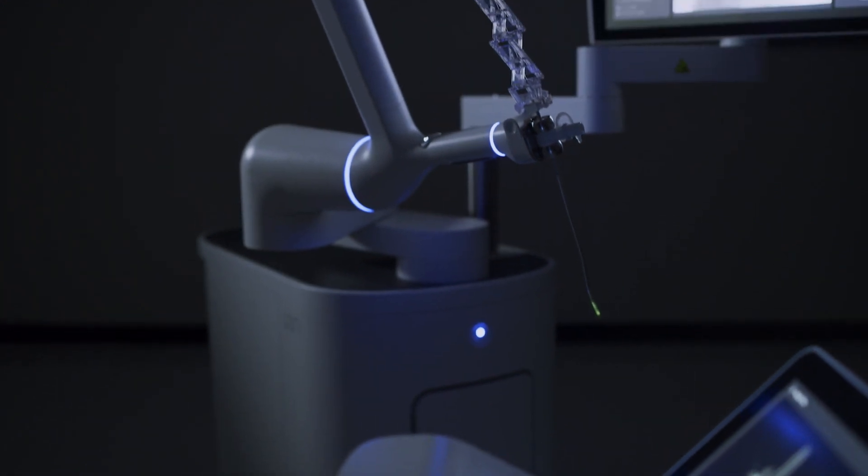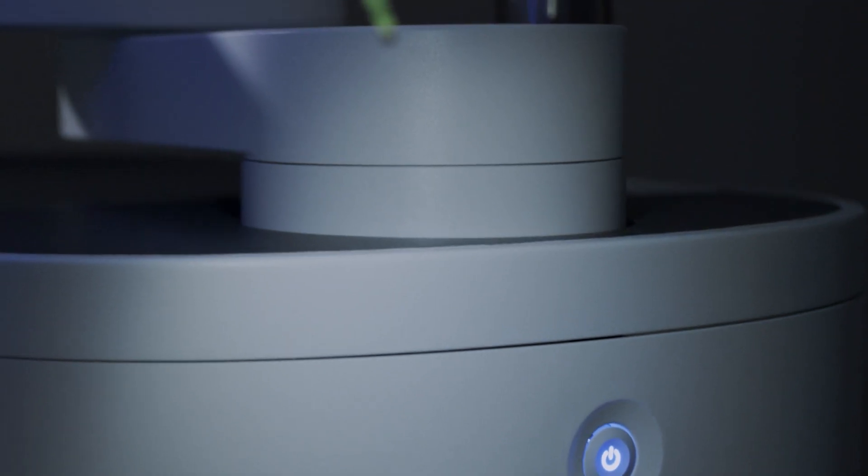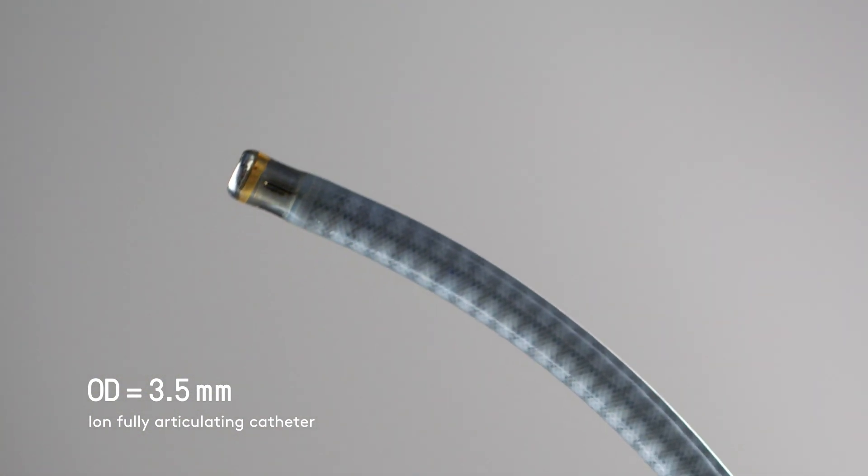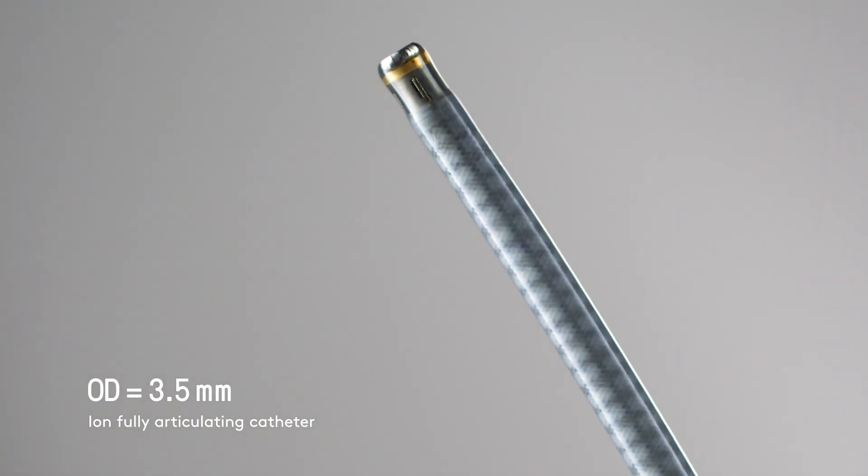We've designed ION to overcome one specific limitation of bronchoscopes with a smaller catheter size. The outer diameter of the ION catheter is only 3.5 millimeters with a 2 millimeter working channel.